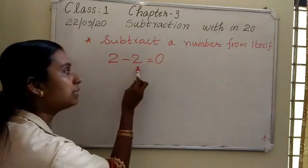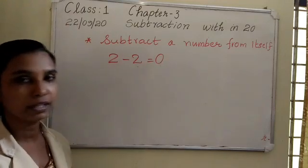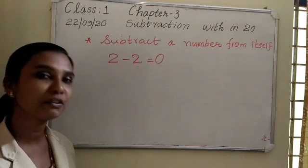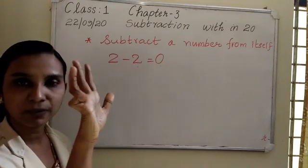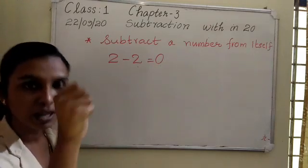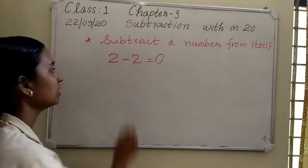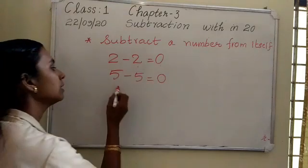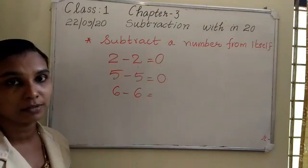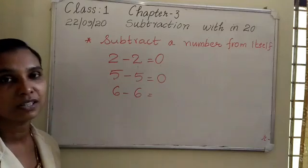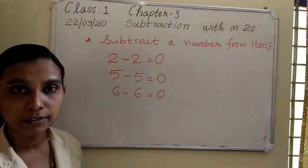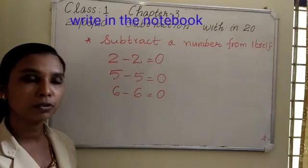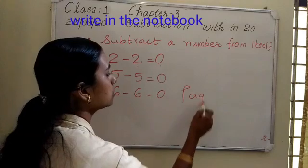When we subtract a number from itself, we get the difference as 0. You have 5 chocolates — you give away all 5 to your mother. How many are left? 0. So 5 minus 5 equals 0. Next: 6 minus 6 — you have 6 crayons and give all 6 to your best friend. How many left? 0. Copy this to your notebook and do textbook page number 56.